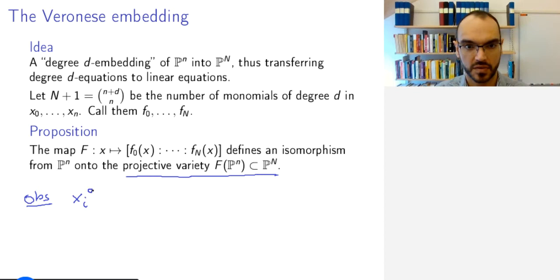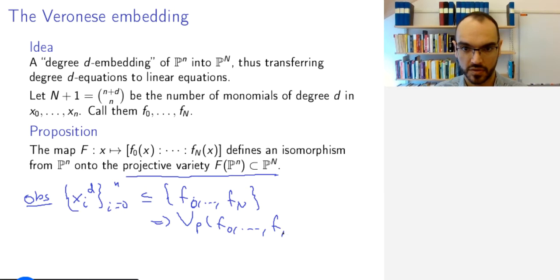And these have no common zero in projective space. So in other words, the vanishing set of f_0 to f_N a fortiori is empty.